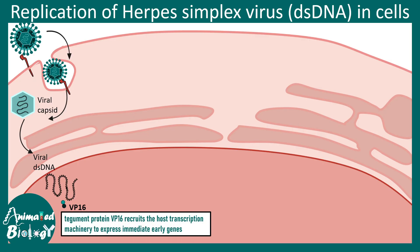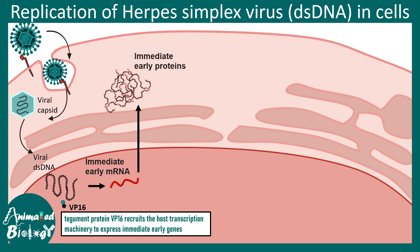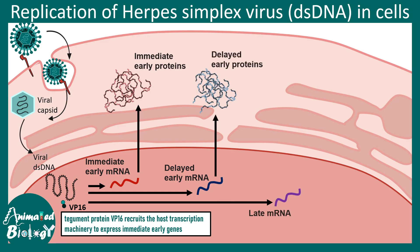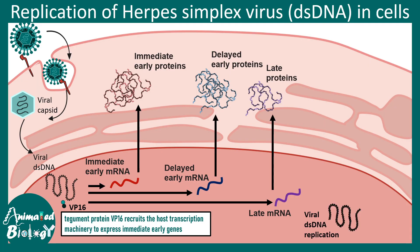Inside the nucleus, the viral dsDNA gets transcribed sequentially. Initially, the VP16 protein, which came along with the virus, recruits the host transcriptional machinery and ultimately produces immediate early genes — produced just after the virus has infected the cell. Gradually, delayed early proteins and late proteins, which are derived from late mRNA, are produced sequentially.